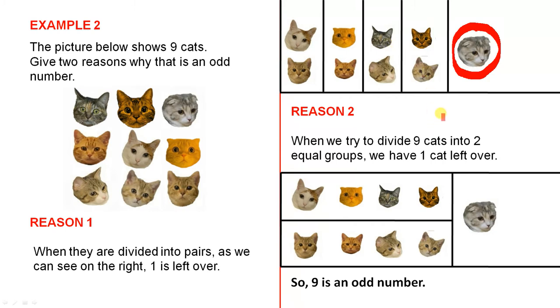Here's another reason. This is the second reason. When we try to divide nine cats into two equal groups, we have one cat left over. Well, here's the first group which has four cats. Here's another group which has four cats and look again, we have one cat left over. So nine is an odd number.